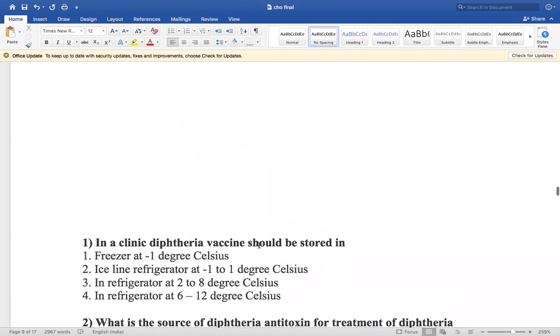In a clinic, diphtheria vaccine should be stored at. Options are: freezer at minus one degree Celsius, ice line refrigerator at minus one to one degree Celsius, in refrigerator at two to eight degrees Celsius,